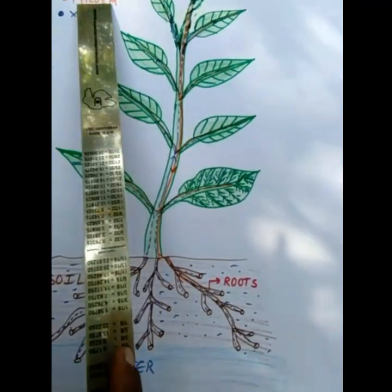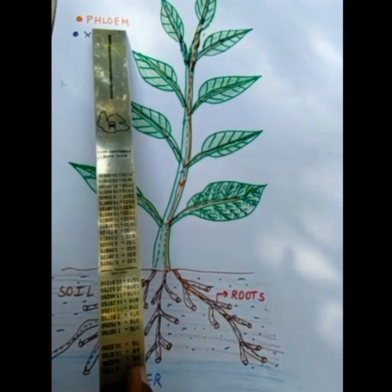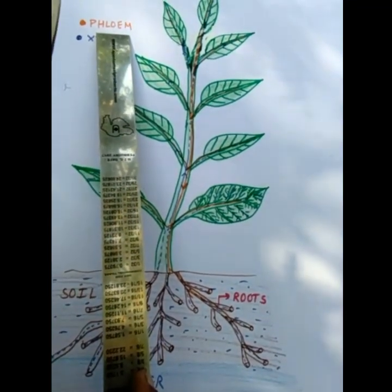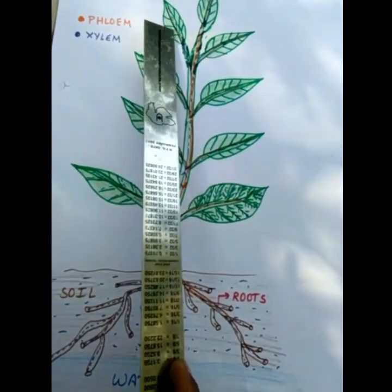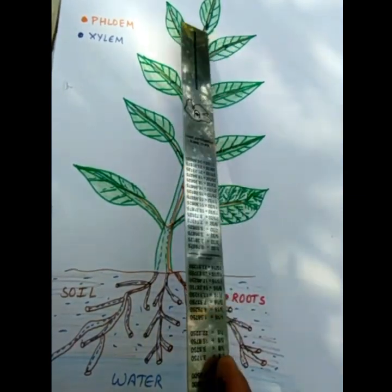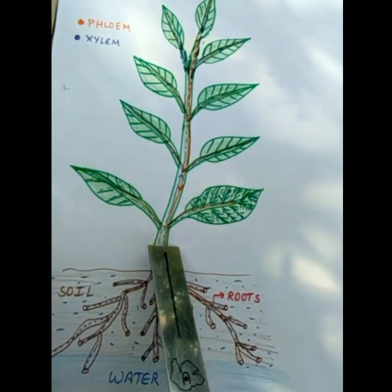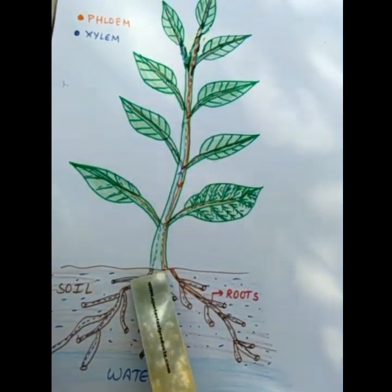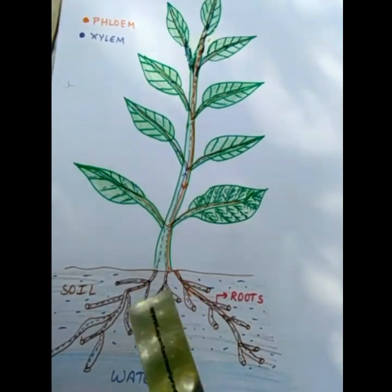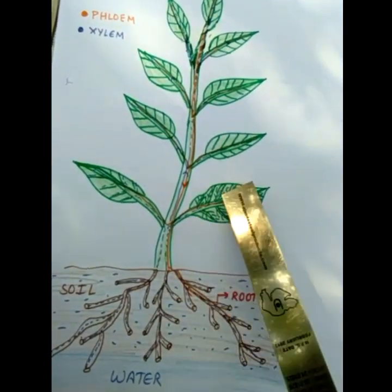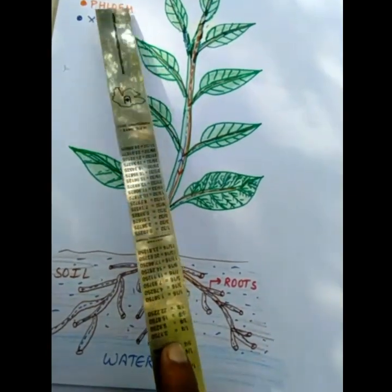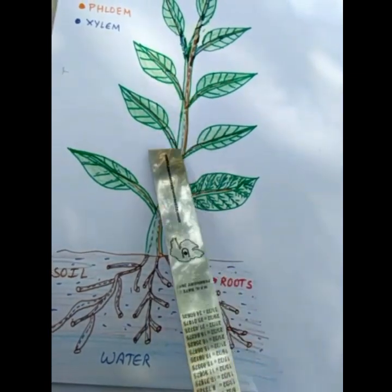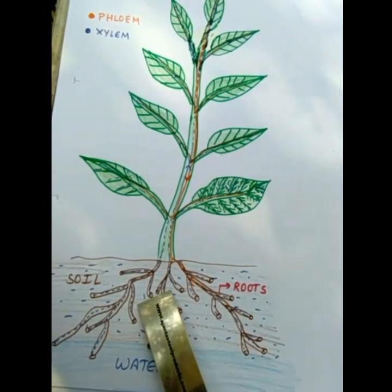Now, phloem. You know that food is prepared in the leaves — the leaves are called the food factories. The other parts of the plant also need food to grow. The tubes known as phloem take the food which is prepared in the leaves to other parts of the plant — to the stem, the roots, and other parts. So xylem are the tubes which carry water from roots to the leaves and other parts of the plant, and phloem are the tubes which carry food prepared in the leaves to other parts of the plant. Are you clear on what xylem and phloem are?